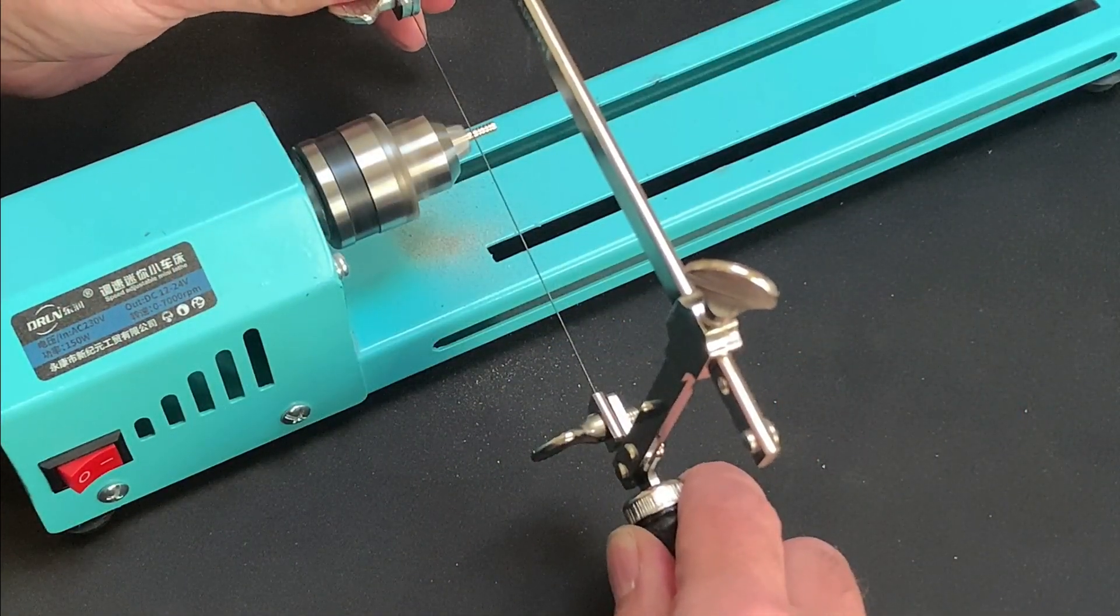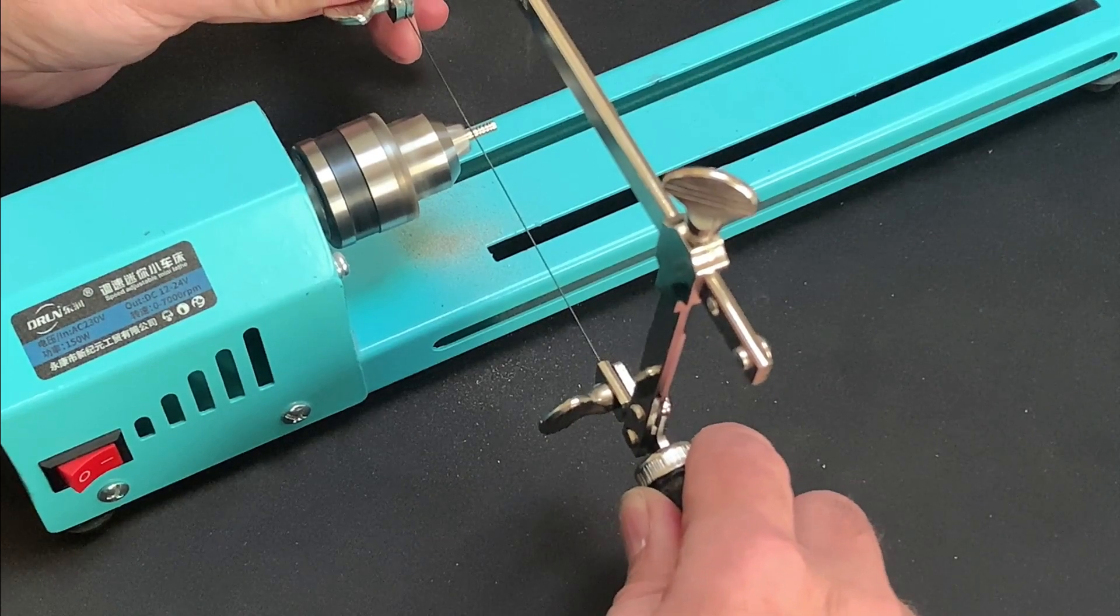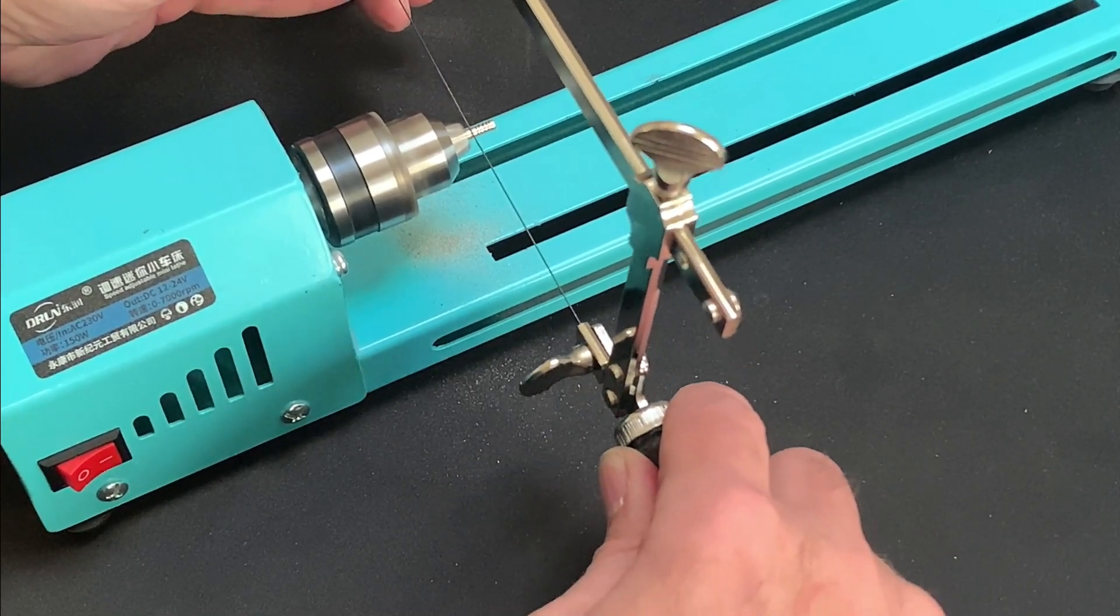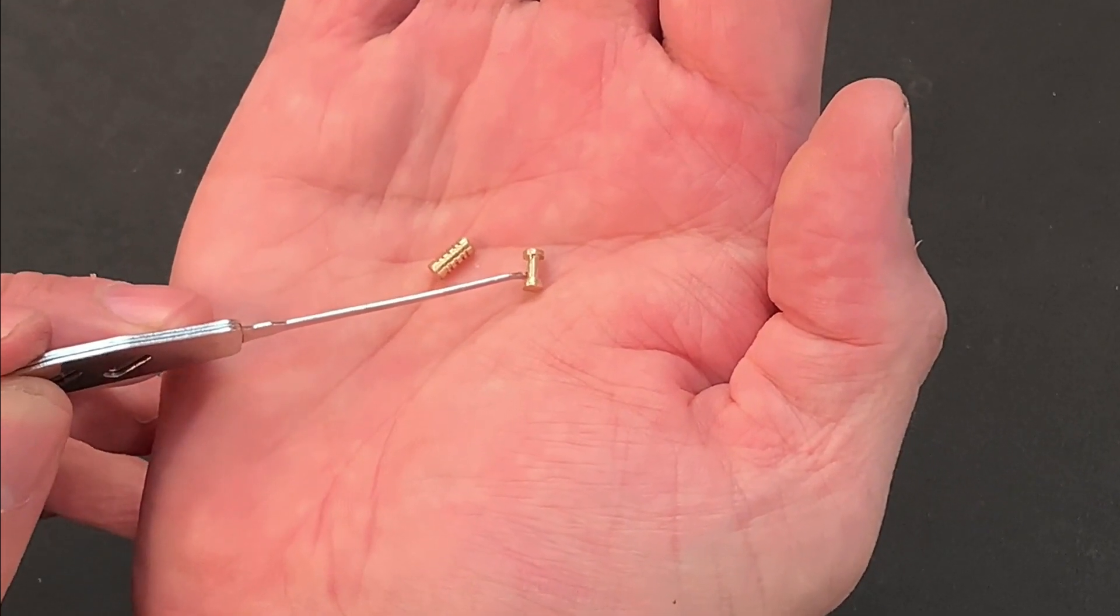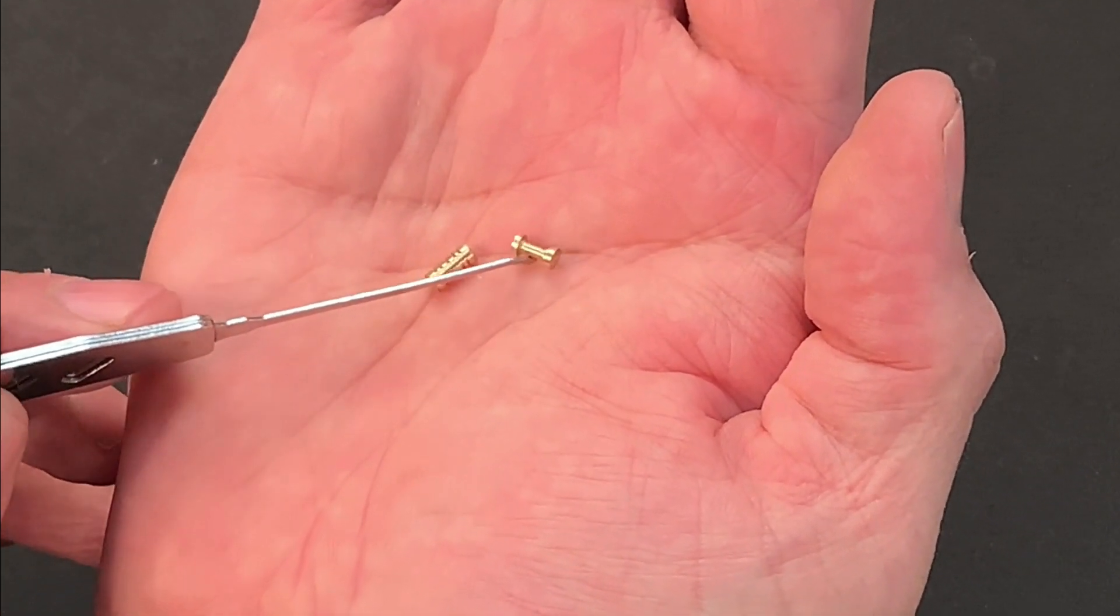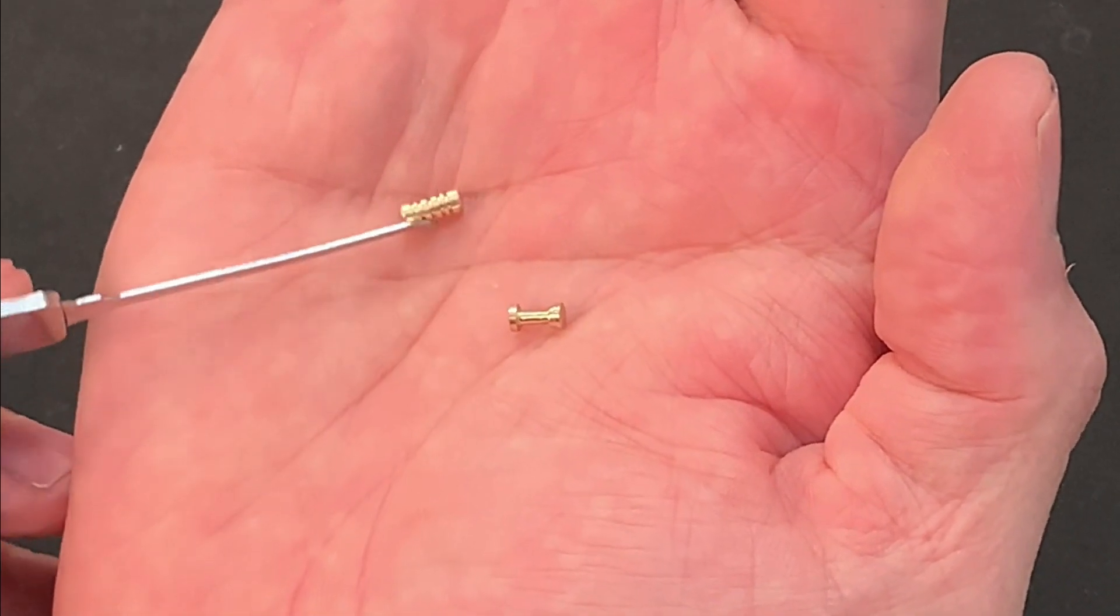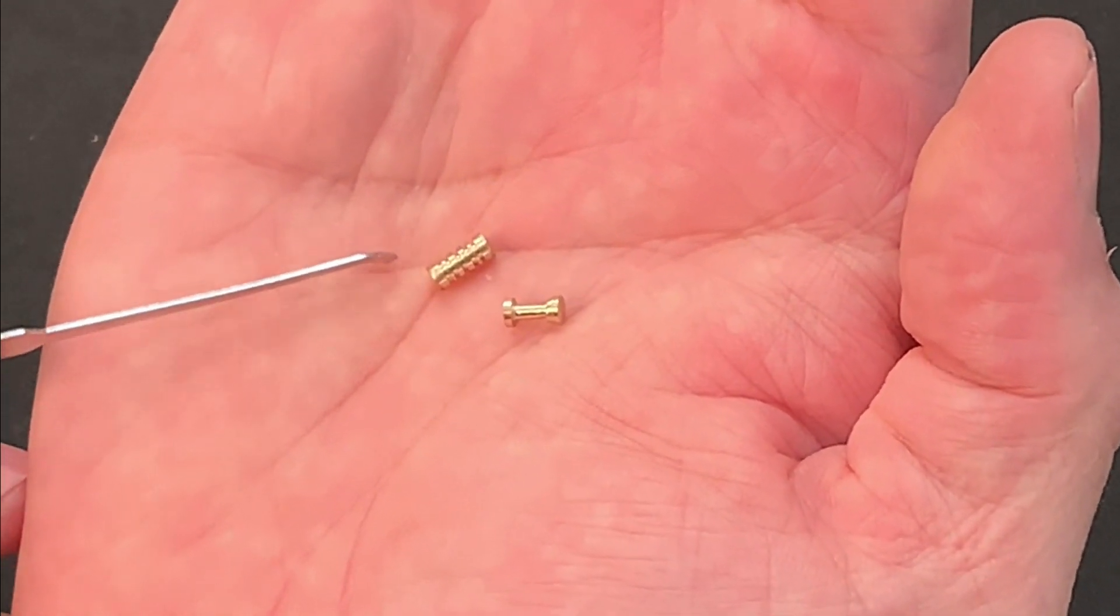Again the mini lathe coped admirably, and for my first foray into making security pins I think these turned out quite well. After cutting them to the required length they just needed tidying up with some thousand grit wet and dry paper, and again I didn't get any sense that the motor was under duress at any point.